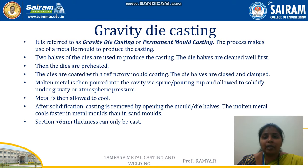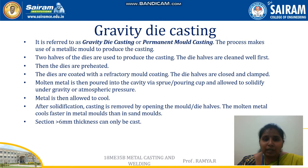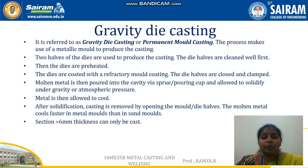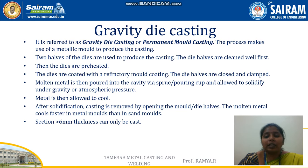The process makes use of a metallic mold to produce the casting. There are two halves of the dies used to produce the casting. The dies are first cleaned, because any presence of dirt may lead to a chemical reaction causing a defective component. To avoid that, the die halves are cleaned well. Then the dies are preheated and coated with a refractory mold coating. The die halves are then closed and clamped.